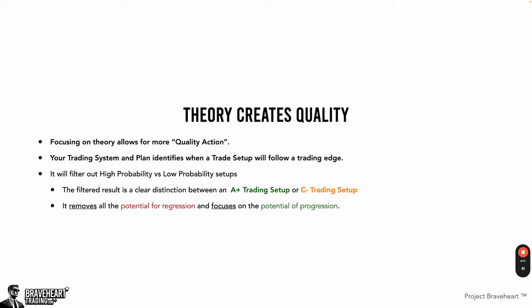An A-plus trading setup would include: we're in low resistance supply, price can be explosive, it's a good day of the week, we have some volatility, we just hit a high timeframe level, and price can move from A to B very fast and aggressively. We want to identify with filters when that's most likely going to happen. We remove all focus from C-minus setups so they don't hold us back. This filtering process removes all potential for regression or stagnation and focuses only on the potential of progression.